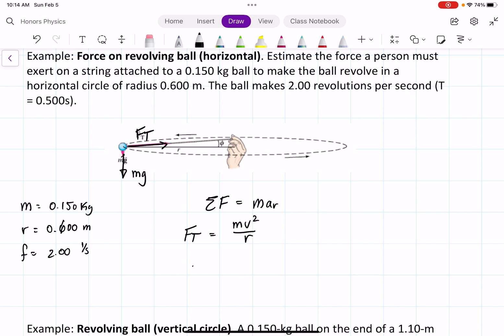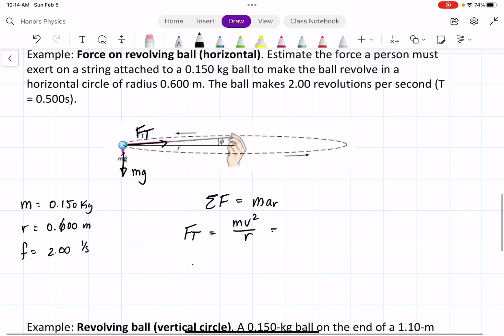We're going to plug in what we know for v, which is that it equals 2πrf, and we get m times 2πrf squared over r. If we square out those terms, we get m times 4π²r²f² over r.